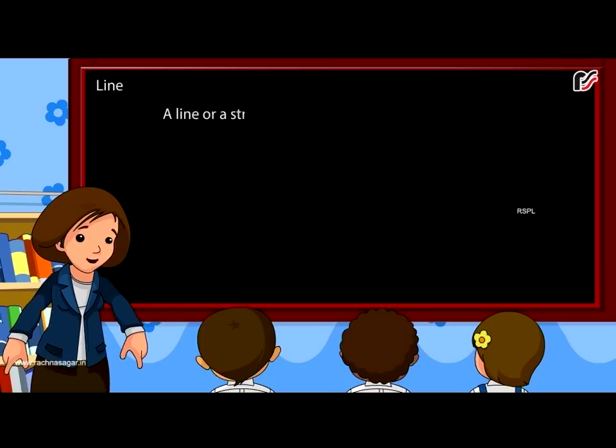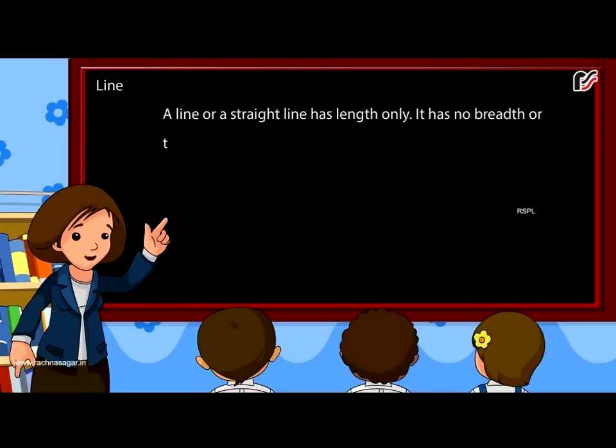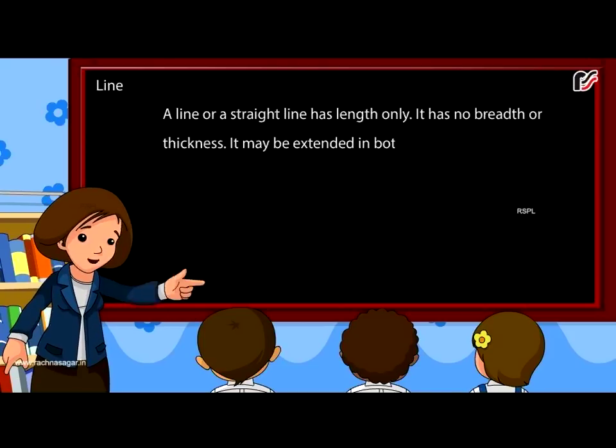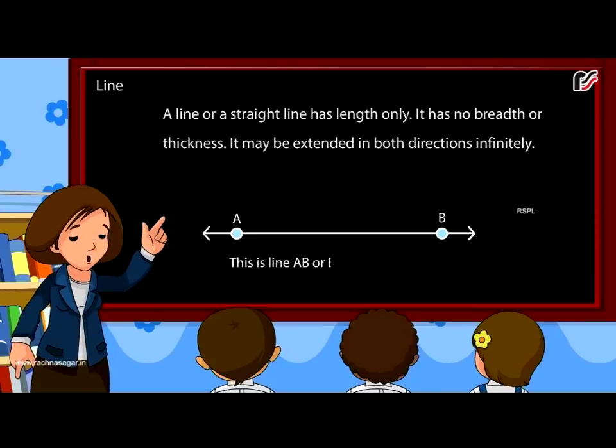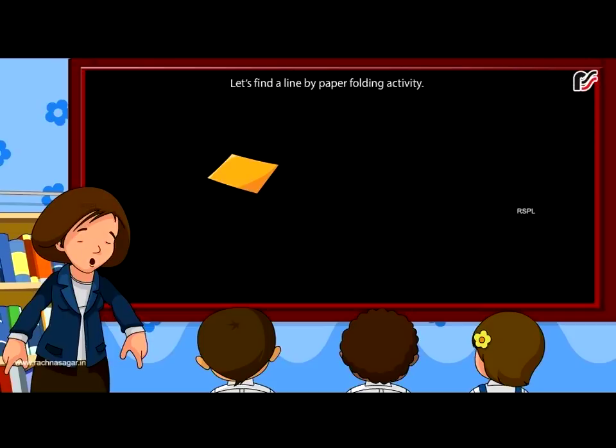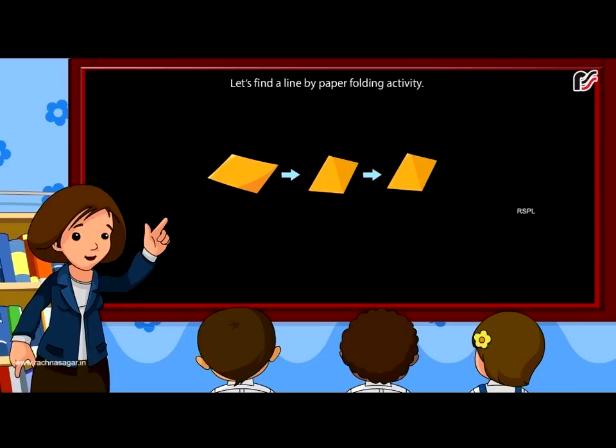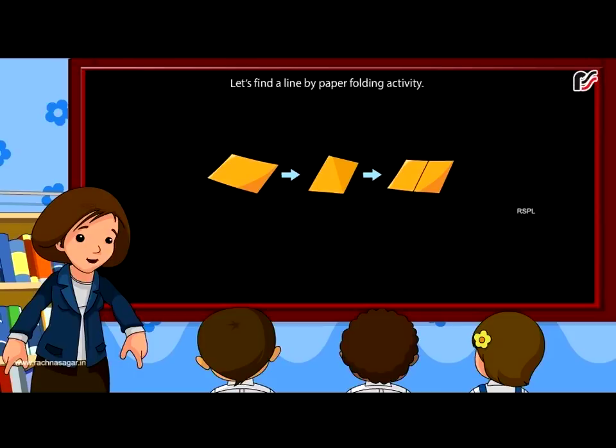Line: A line or a straight line has length only. It has no breadth or thickness. It may be extended in both directions infinitely. Look at the line drawn below. This is line AB or BA. It can be written as AB or BA. Let's find a line by paper folding activity. Take a sheet of paper and fold it. When you open the fold, you will find a crease formed. This gives the idea of a straight line.